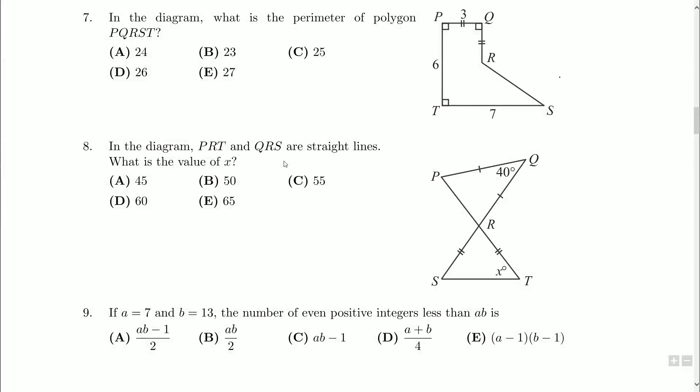In the diagram PRT and QRS are straight lines, so they both go through R here. What is the value of x? So we have x degrees here, we have a couple sides that are the same, and we have 40 degrees up here. So it looks like PQR is an isosceles triangle and so is RST.